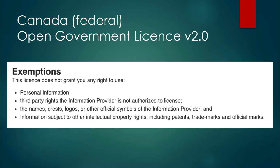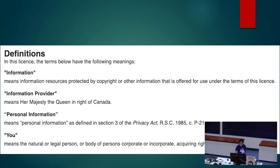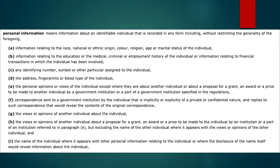Another example is Canada's Open Government License, which is adapted from the UK version. One thing to point out is the definition of 'personal information,' which references a section of Canadian federal law. When looking at a license, make sure to check what it's pointing to. In this case there's nothing concerning in the Privacy Act — it defines personal information as you'd normally expect, like birth dates — but you have to follow up and actually find that section and read it.